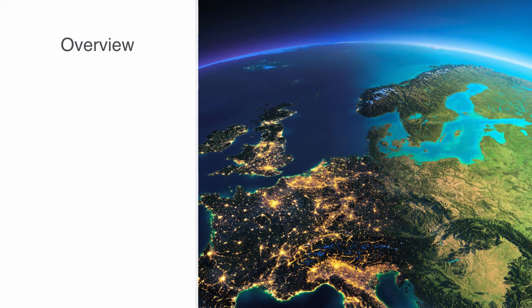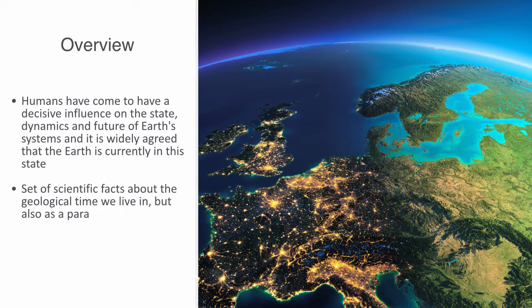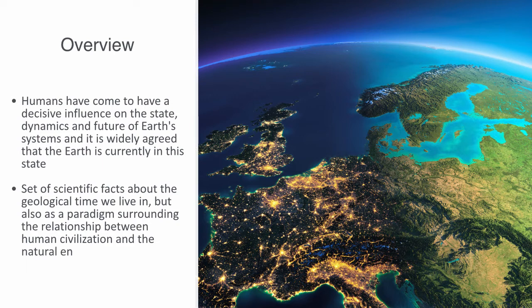The Anthropocene has emerged as a popular term used by scientists, media, and the general public to describe the period of Earth's history during which humans come to have a decisive influence on the state, dynamics, and future of Earth systems, and it is widely agreed that the Earth is currently in this state. We can understand the Anthropocene as both a set of scientific facts about the geological time we live in, and also as a paradigm surrounding the relationship between human society and the natural environment.